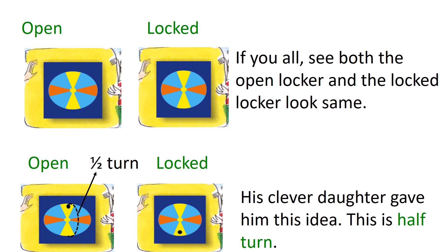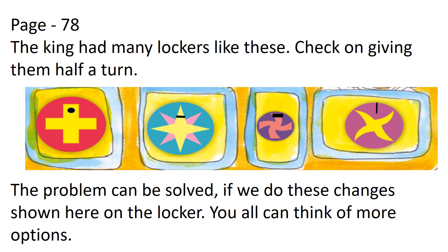So, one day, the king's clever daughter asked the king to put a dot on one of the yellow blades. The king put a dot on the top of the yellow blades when the locker was open. When he closed the locker by turning it half a turn, the black dot came down. This helped him find out when his locker was open and when it was closed. The king had many more lockers like these — options include putting a dot on the top, a dash, a block of black, or a vertical line. Two half turns make one full turn, and four quarter turns make one full turn.